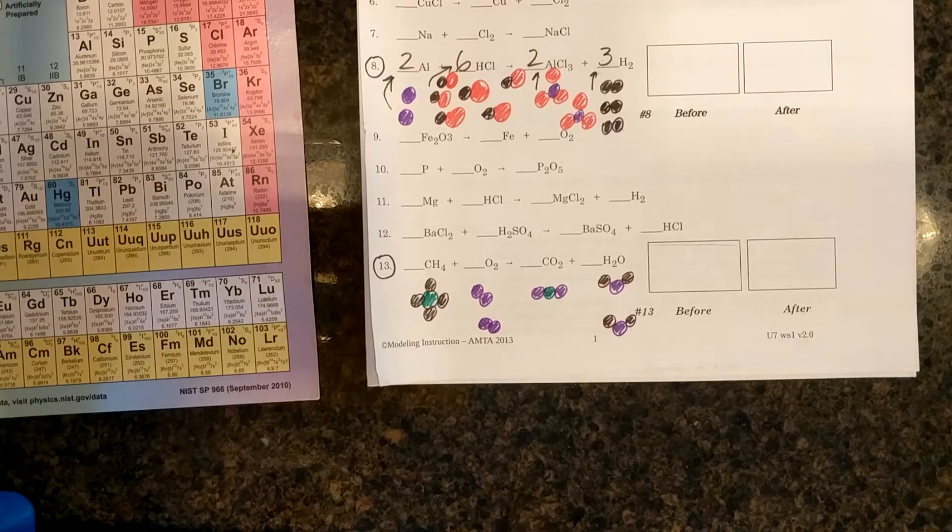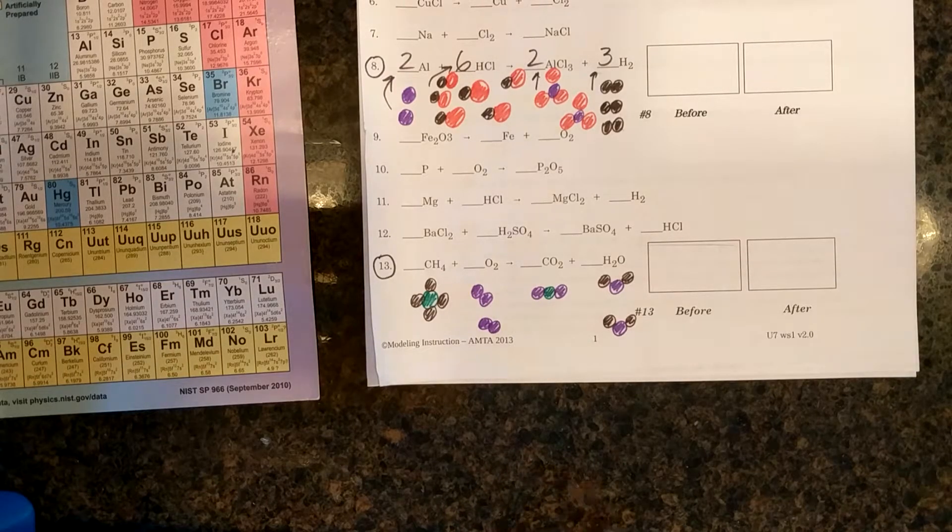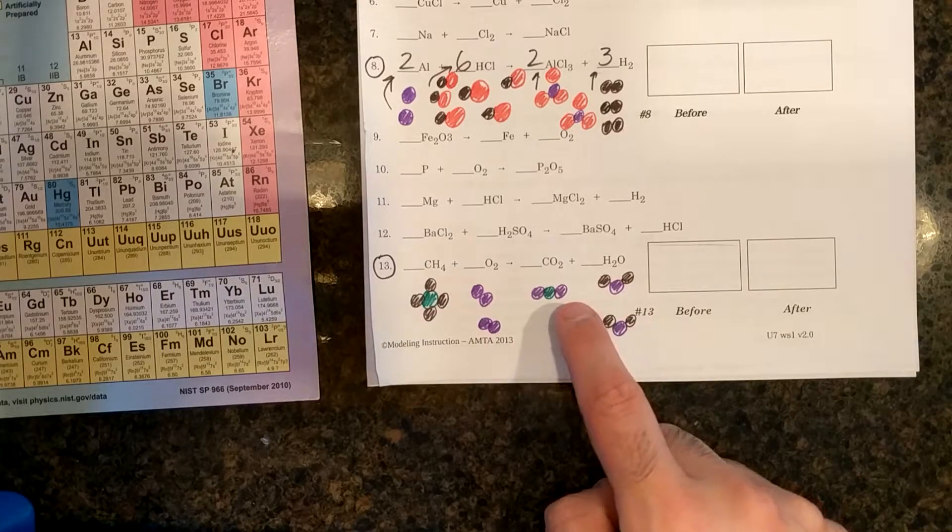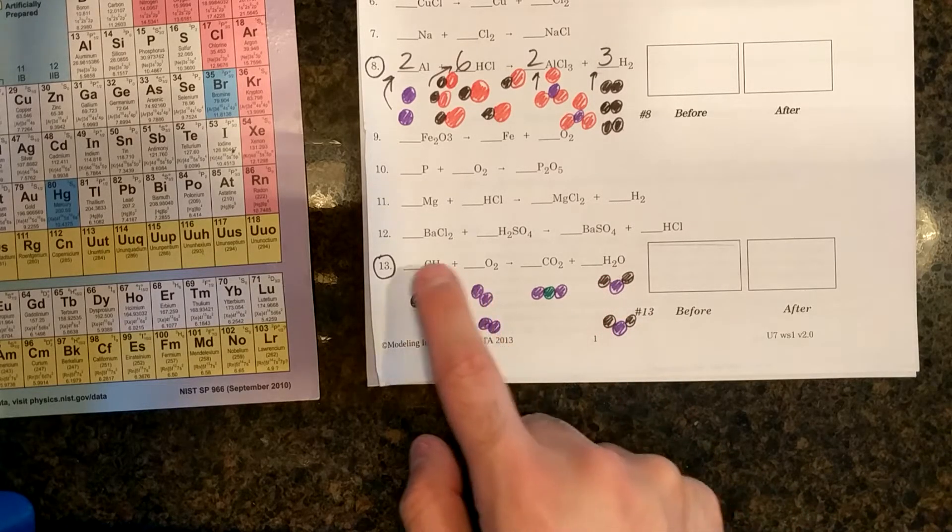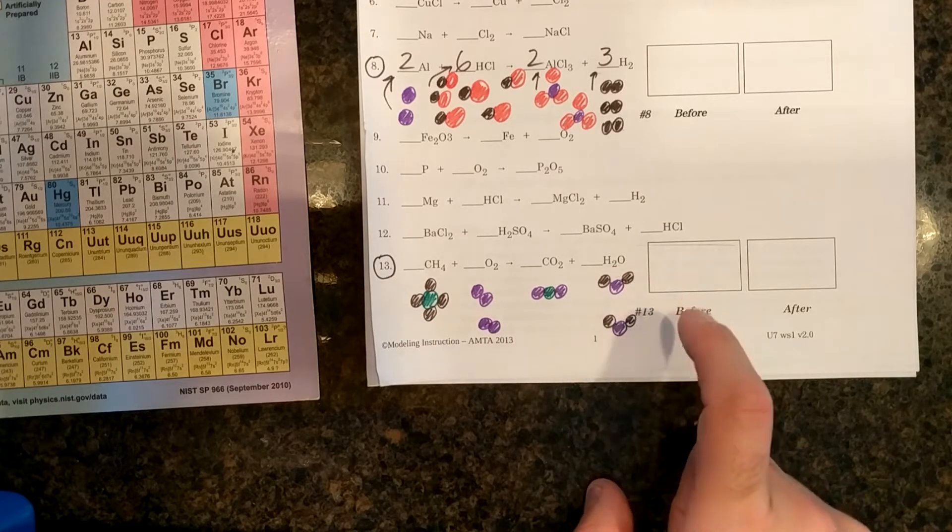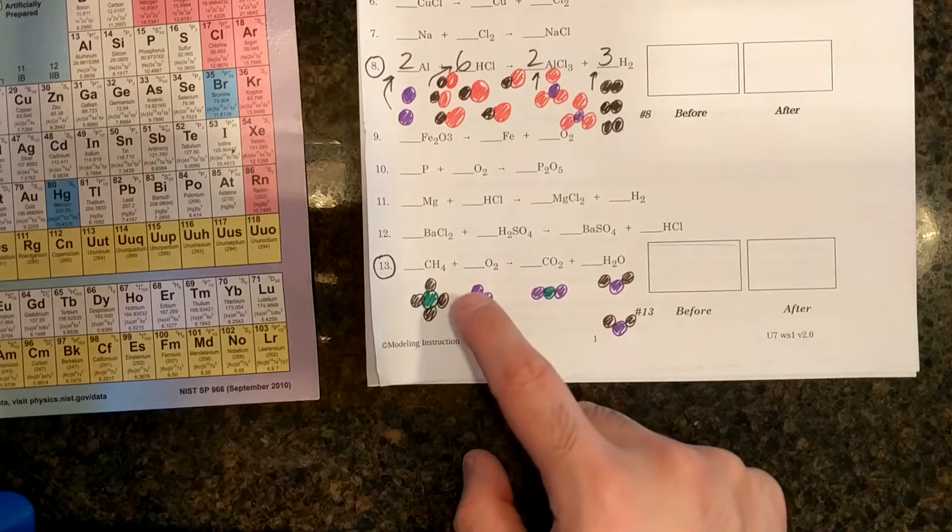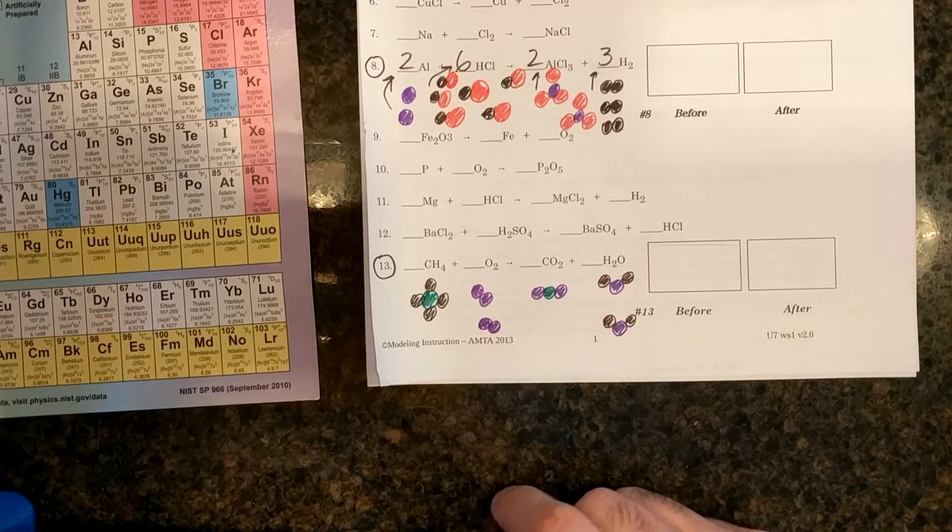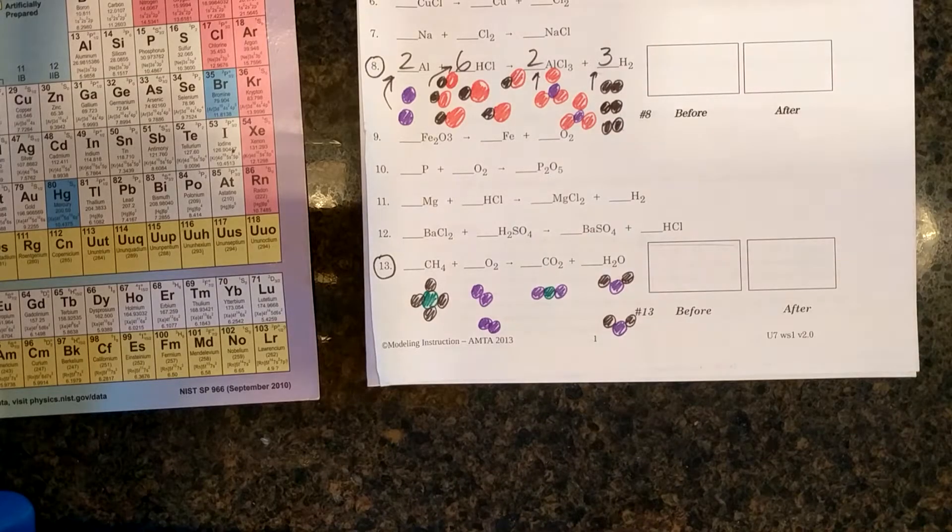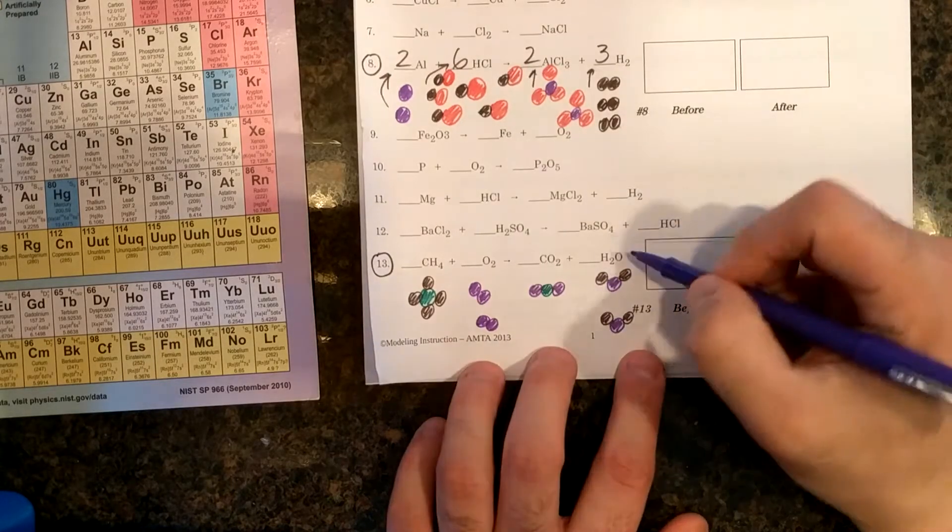And now let me see if my chemical reaction is balanced or if I need to add any more. I have one green carbon on the left, one green carbon on the right. I have four hydrogens on the left, four black hydrogens on the left. I happen to have four black hydrogens on the right. That's good. I have four oxygens on the left. I have one, two, three, four oxygens on the right. This equation is balanced.